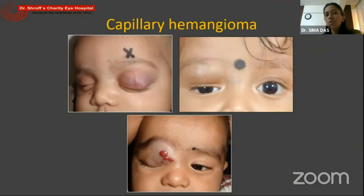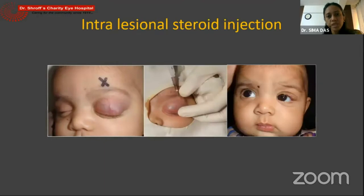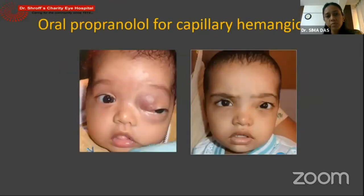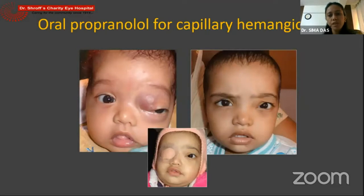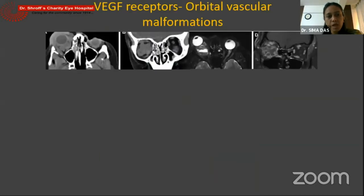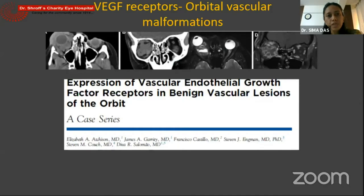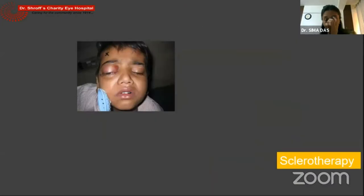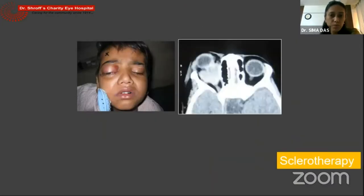Now hemangioma — we all know a lot about capillary hemangioma. The treatment has changed from intralesional steroid injection to excision to propranolol, now being the first line of treatment modality with very good response to treatment. We also now have several reports where efficacy of topical beta blockers has been shown to be very useful in superficial lesions specifically. There are also reports of VEGF receptors being present in orbital vascular malformations and possibly a role of anti-VEGFs in these patients.